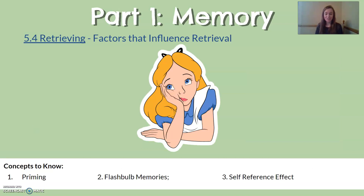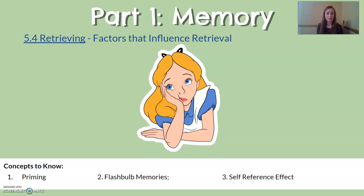Going further with retrieval factors: I asked you to spell the word 'bored' on your paper. Did you spell it B-O-A-R-D or B-O-R-E-D? If you spelled it as in 'not interested,' you might've been primed. Priming is when something predisposes you to pull out a memory or remember something in a certain way. I may have primed you by putting a picture on screen, predisposing you to spell 'bored' as disinterest.